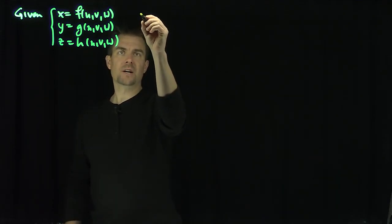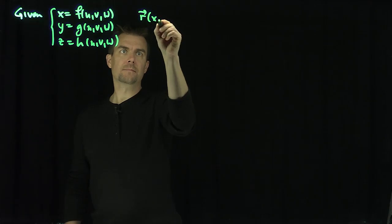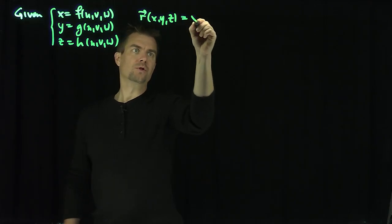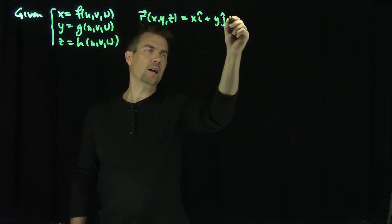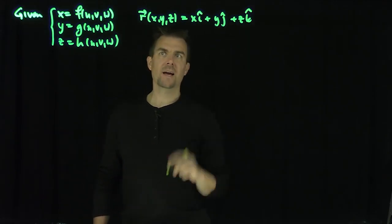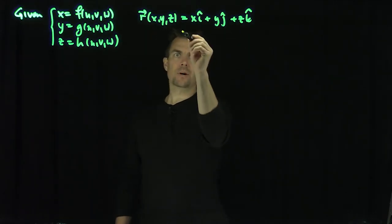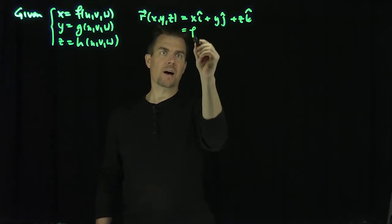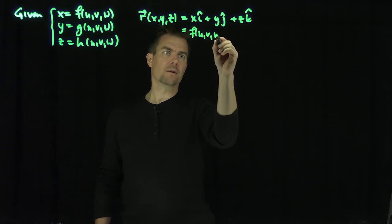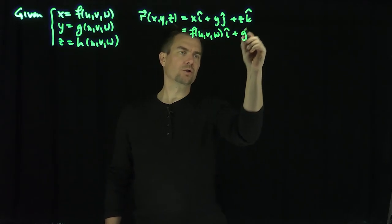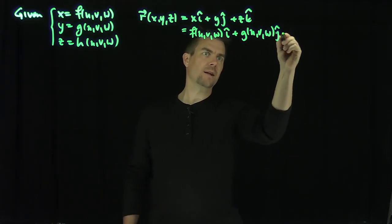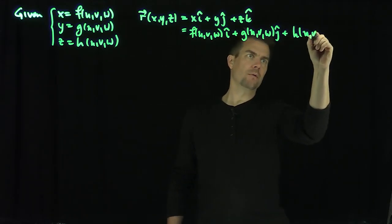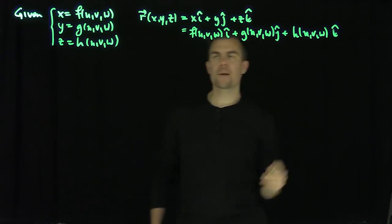Our setup is to look at r(x, y, z), the vector field of position, which is x î + y ĵ + z k̂. I can fill in these expressions: this is going to be f(u, v, w) î + g(u, v, w) ĵ + h(u, v, w) k̂.